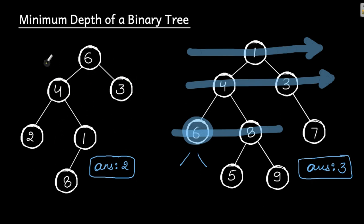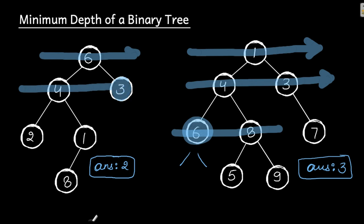Let's take another example. If we do BFS here, the first level is this, second level is this. When we reach this node — the node whose left and right are both null — that is the first leaf node in BFS order. So the key idea is: whatever is the first leaf node encountered in BFS, the level at which it appears is going to be your minimum depth.